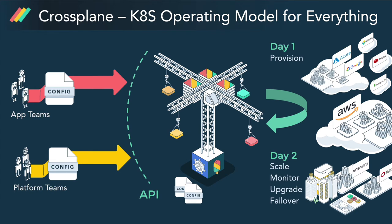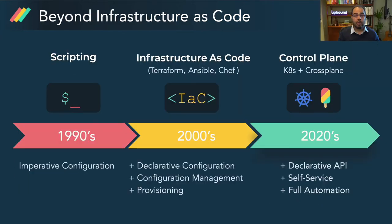Platform teams and application teams can now simply author configurations for databases, caches, networking, and other services. Configurations are continuously reconciled by Crossplane, and day-one and day-two automation is handled out of the box. With Kubernetes and Crossplane, we see the industry moving off of infrastructure as code tooling and onto control planes.